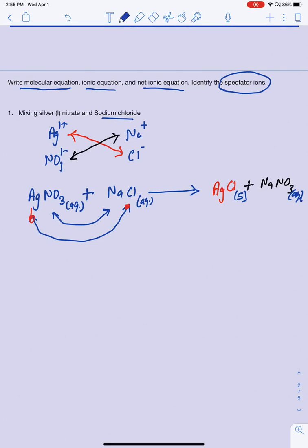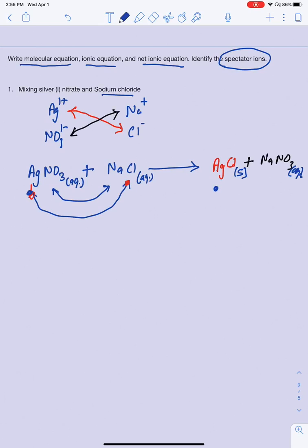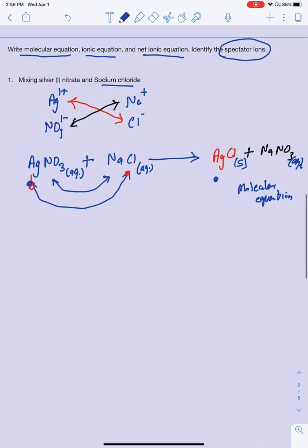Since AgCl is the solid, that's the driving force in this reaction. Once you have predicted the products, go back and make sure the reaction is balanced: one silver on each side, one sodium on each side — this reaction is already balanced. Balance must be done after predicting the products, not before. This completed reaction is called the molecular equation.